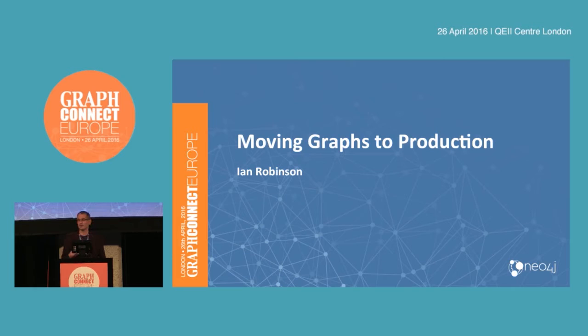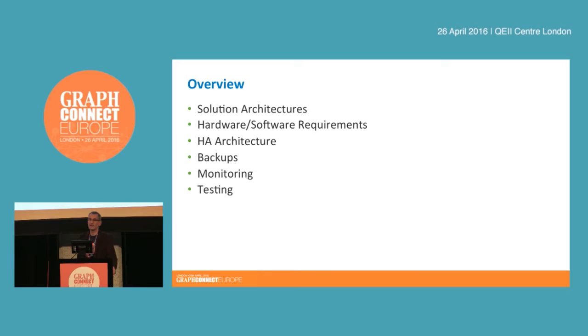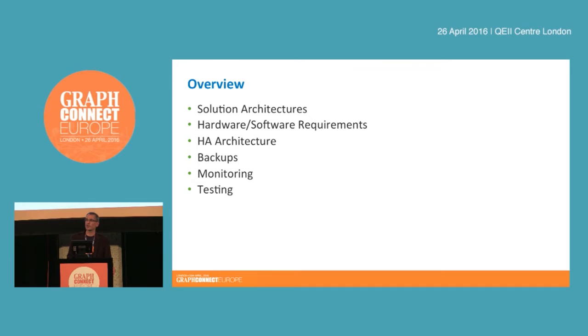More recently I've been working with a team here in London to build some of our data integration tooling. But today I'm going to be talking about moving graphs to production — effectively moving your Neo4j-based application into production and how we can plan for that and then execute on it. Over the next half hour we'll look at solution architecture options, hardware and software requirements, the HA architecture, tuning and configuration, and operational issues like backups and monitoring. Finally, I'll briefly cover some testing strategies.